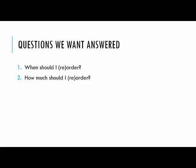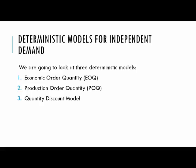Chapter 12 comes down to two big questions: number one, when should I order or reorder? And number two, how much should I order or reorder? We're going to look at different models to help answer these questions. First, we'll look at deterministic models for independent demand. Deterministic means there's no variability — no probabilities, no statistics. We're going to look at three deterministic models: the EOQ (Economic Order Quantity) Model, the POQ (Production Order Quantity) Model, and the Quantity Discount Model.